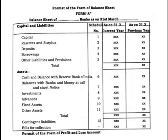Under capital and liabilities: note number 1 is capital, note number 2 is reserves and surplus, note number 3 is deposits, note number 4 is borrowings, and note number 5 is other liabilities and provisions. Adding notes 1 to 5 gives the total of capital and liabilities. Under assets: note number 6 is cash and balances with RBI, note number 7 is balances with banks and money at call and short notice, note number 8 is investments, note number 9 is advances, note number 10 is fixed assets, and note number 11 is other assets. Adding notes 6 to 11 gives total assets.